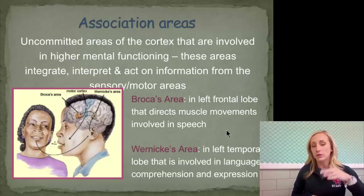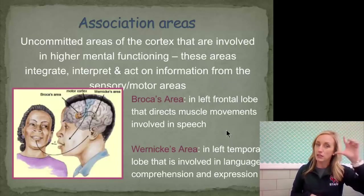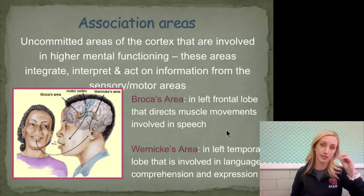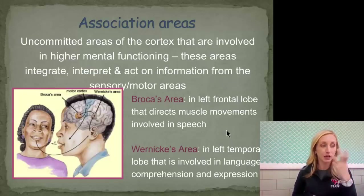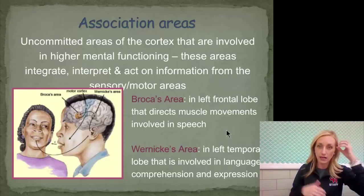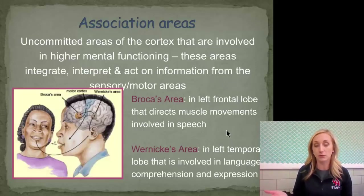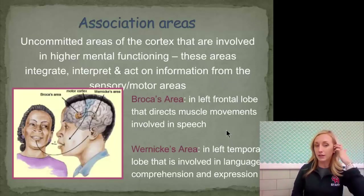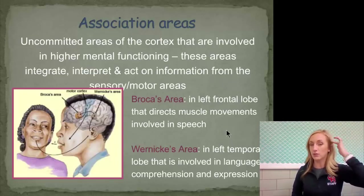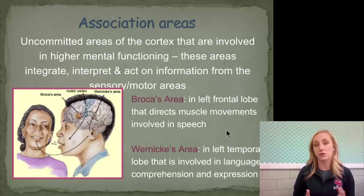Both Broca's and Wernicke's areas are in the left hemisphere — remember: language left. Broca's area is in the frontal lobe's motor cortex and directs muscle movements involved in speech, coordinating the tongue, jaw, and mouth. Wernicke's area is a bit further back in the temporal lobe and is involved in language comprehension and expression — near your ears, since you hear things to comprehend them. It's also involved in comprehending sign language.